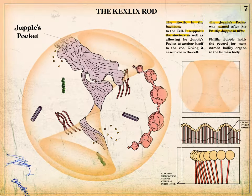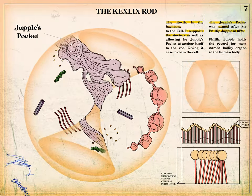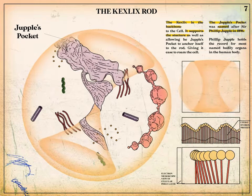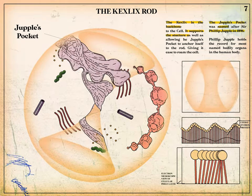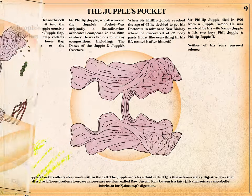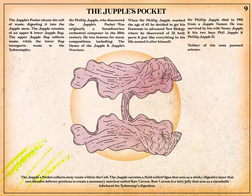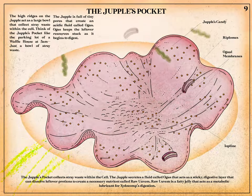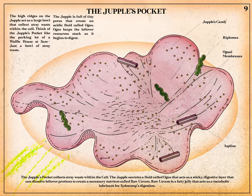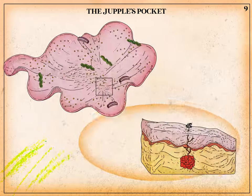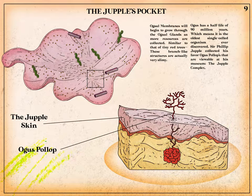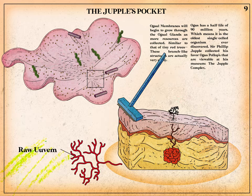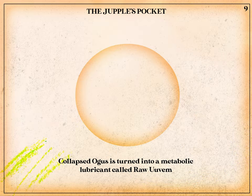The Kexlex is supported by a thin teflon membrane called Juppel's pocket, named after Philip Juppel in 1896. Juppel's pocket collects stray waste within the cell. The Juppel secretes a fluid called ogus that acts as a sticky digestive layer, dissolving leftover proteins to create a necessary nutrient called raw uvum.